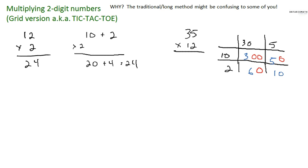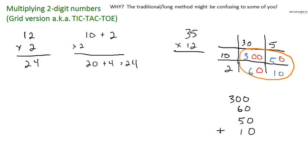I just did it in blue and red so you can see the idea — I just throw in the extra zeros. And now what we're going to do is take all these numbers and add them together. So here we go: three hundred, sixty, fifty, and ten. I try to write all four numbers from greatest to least. Zero plus zero plus zero plus zero is zero. Zero plus six plus five is eleven, plus one is twelve — write two, carry one. One plus three is four. And the answer is four hundred twenty.